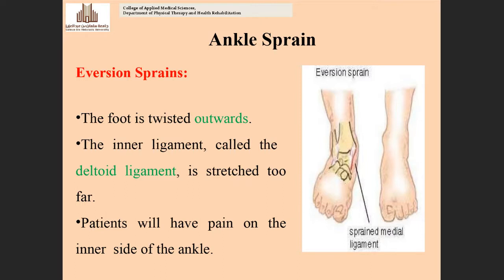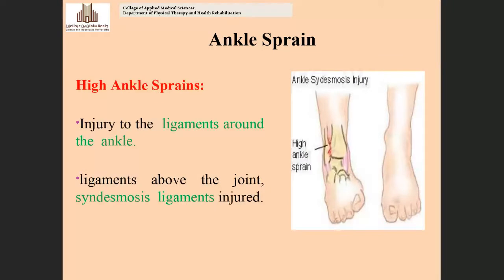In the pronated foot, the injury is to the medial ligaments. The commonly involved ligament is the deltoid ligament — the ligament present in the medial aspect of the ankle joint. If the foot goes into a pronated or everted position, there is a possibility of injury to these medial ligaments. The patient will have pain on the inner side of the ankle. These are the two common sprains: inversion sprain and eversion sprain.